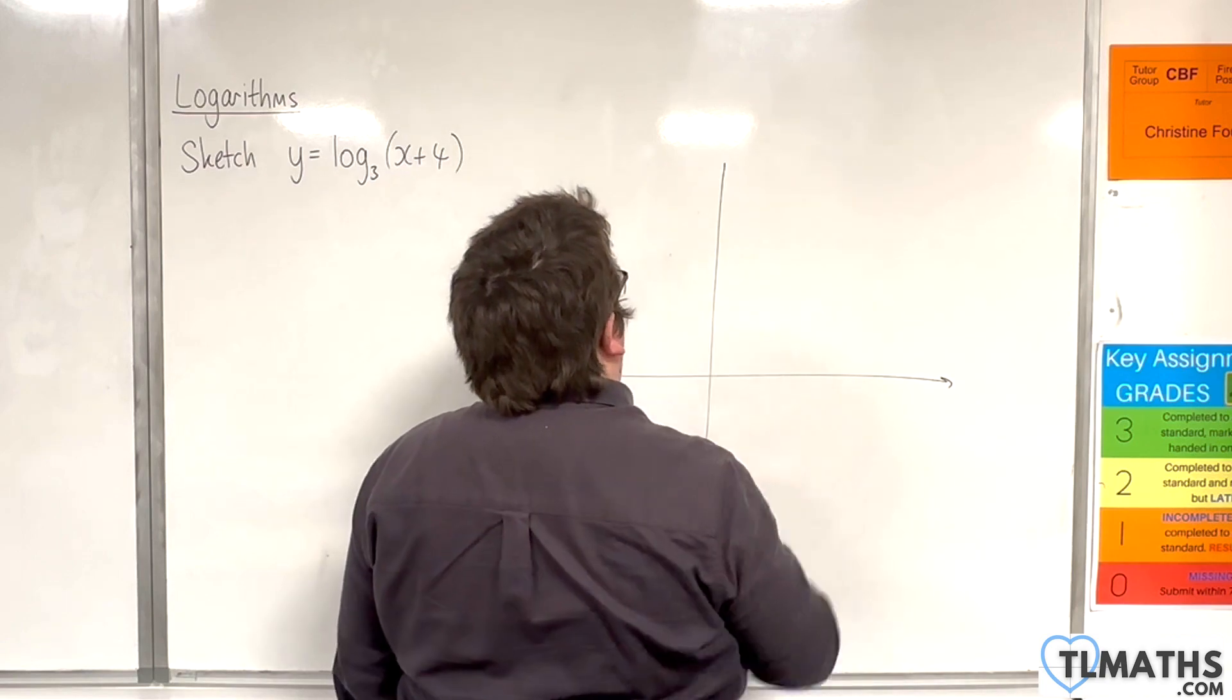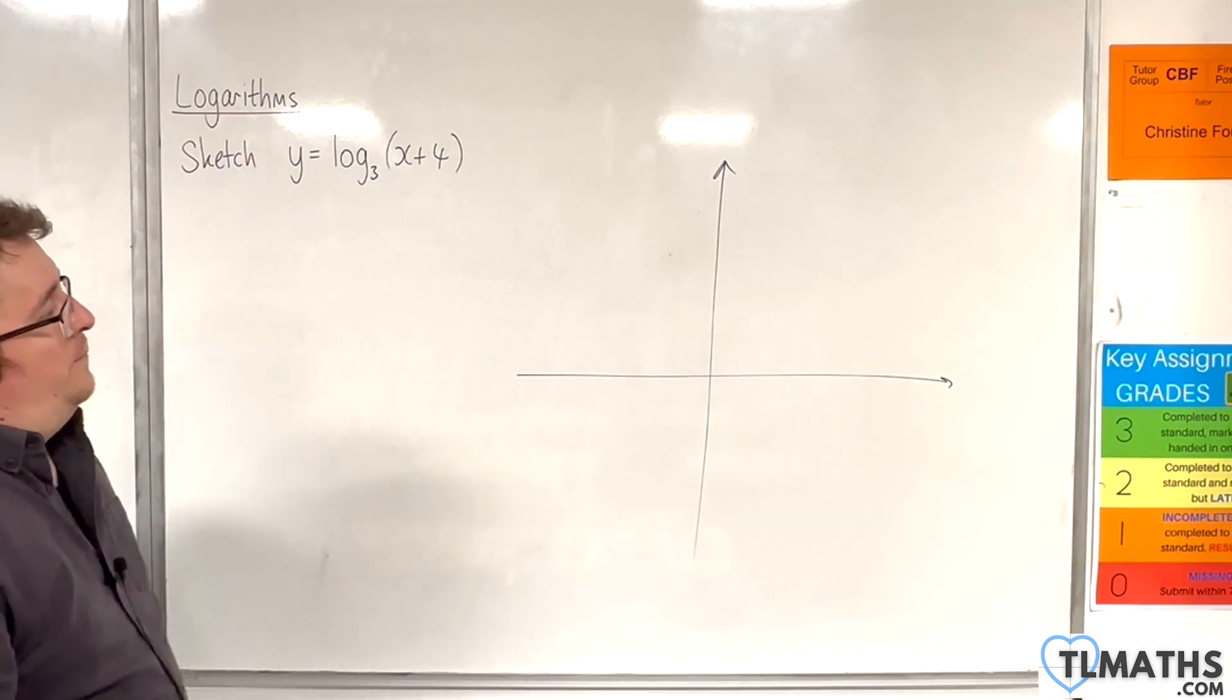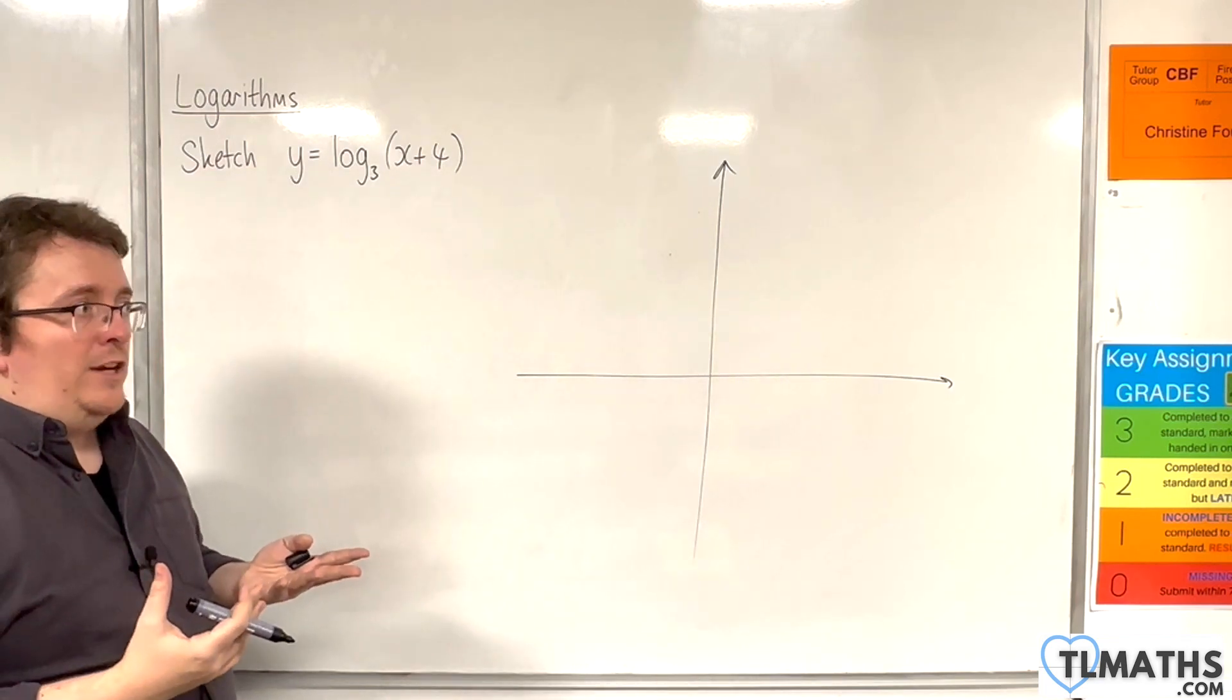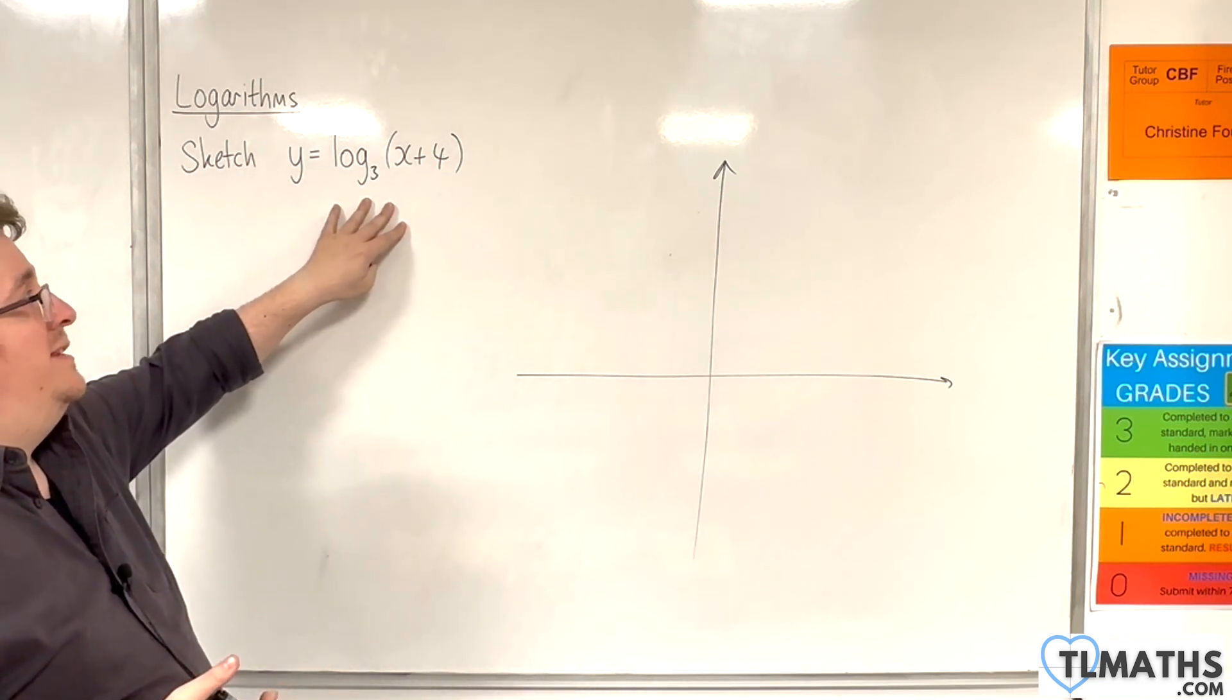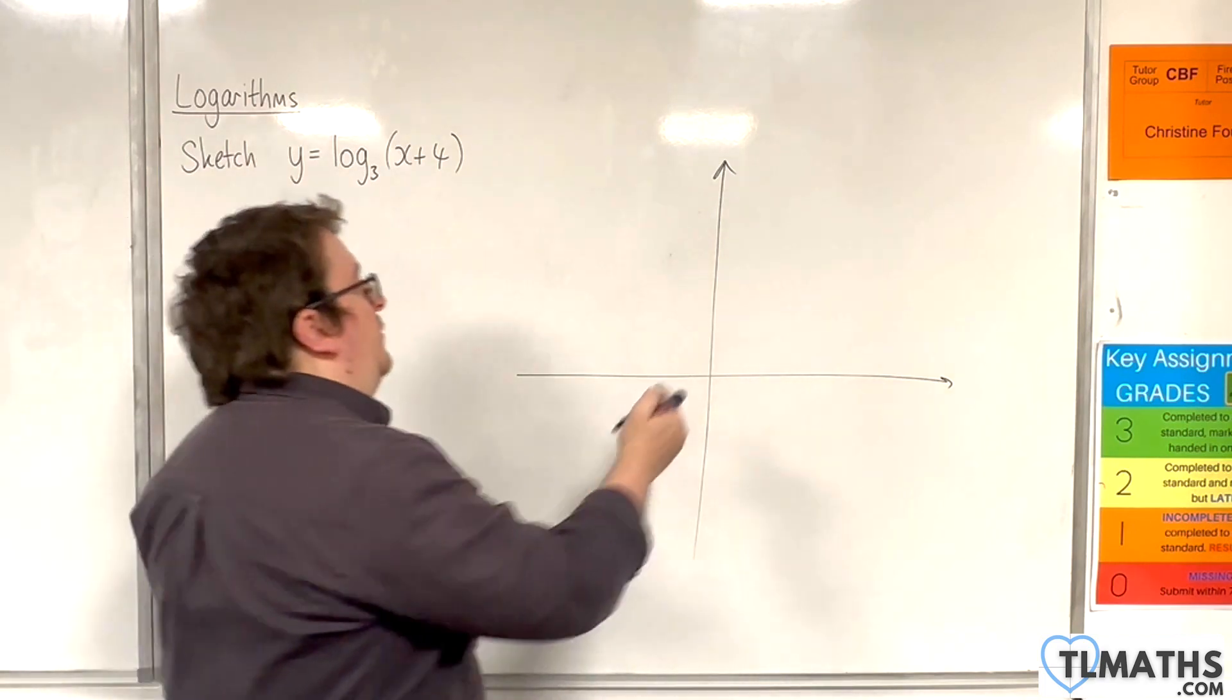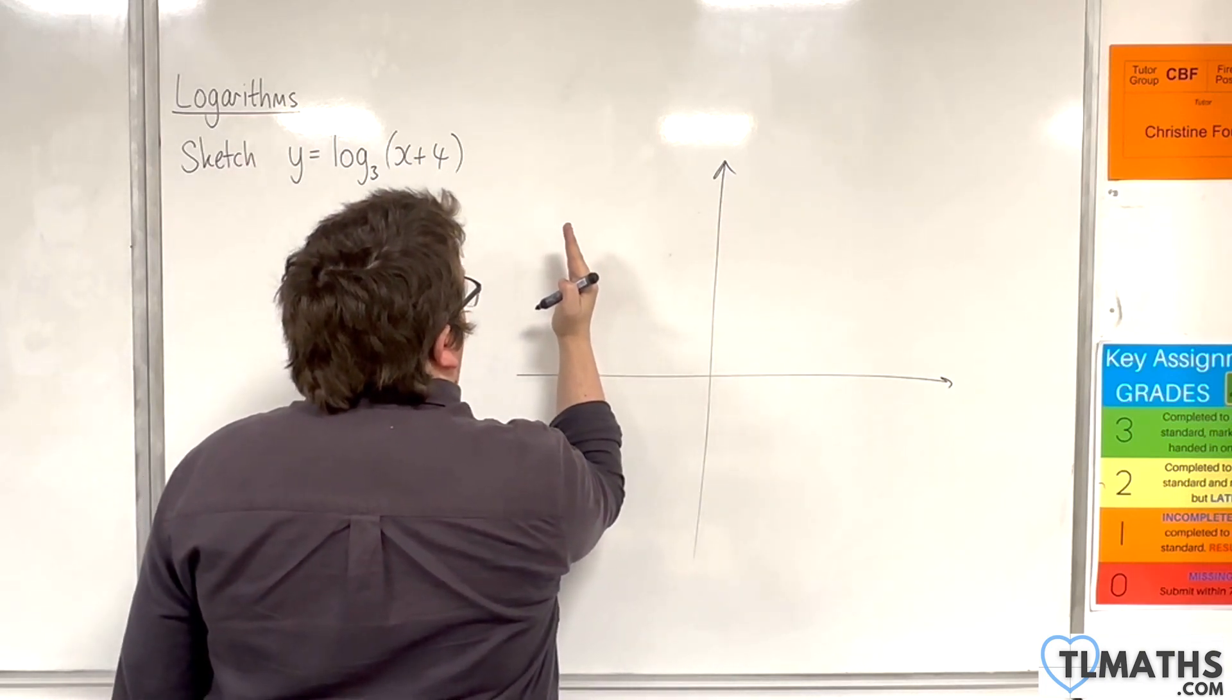We should be able to identify where the vertical asymptote is. In the previous example, we looked at it as a translation, and you can look at it as a translation here as well, because log base 3 of x is being translated 4 units to the left. That means our vertical asymptote at x is 0 will now be at x equals minus 4.